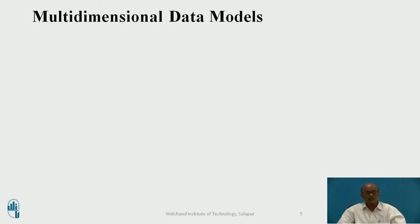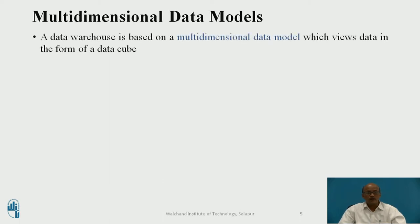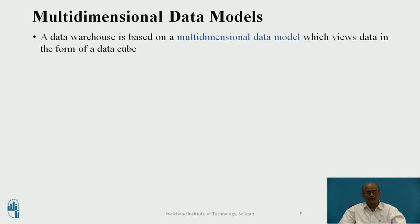Now let us take the next point: multidimensional data models. A data warehouse is based on a multidimensional data model, which views data in the form of a data cube — meaning data is represented in the form of a cube. Instead of representing n-dimensional data in one dimension, cubes are used to represent the data.